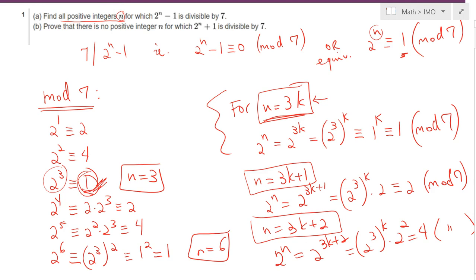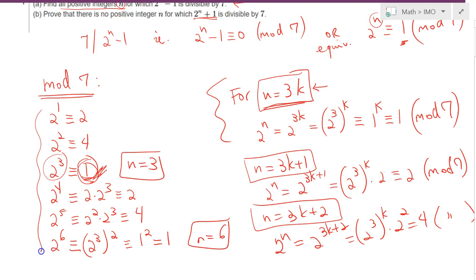So all positive integers n which are multiples of 3 satisfy the condition in part a. Now in part b, we are curious if it's possible to have 2 to the n power being congruent to negative 1 in mod 7. But negative 1 is just 6 in mod 7, and that's not going to work because we never get a 6. We just see a repetition of 2, 4, 1, 2, 4, 1, and so on.